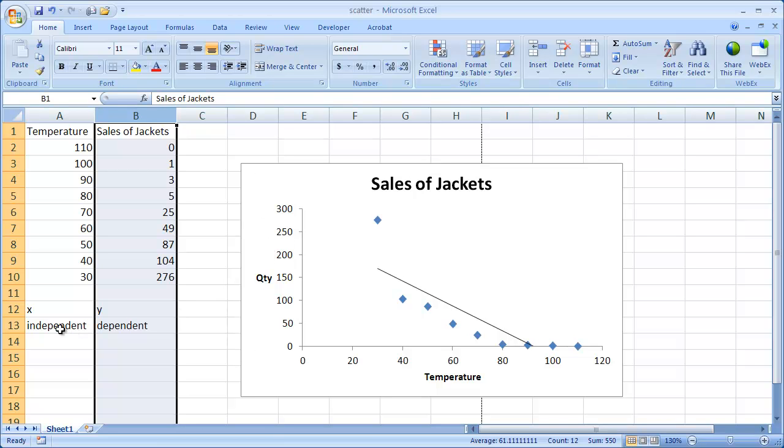Now, the X-axis would be our independent variable, so it's not dependent on anything, and the Y-axis is our dependent variable, so that basically would depend on the values of the X-axis.